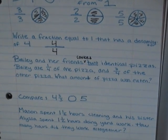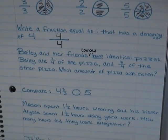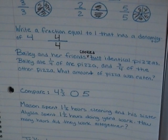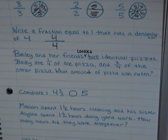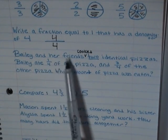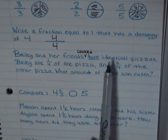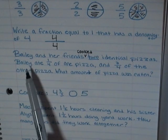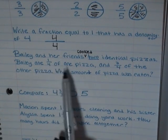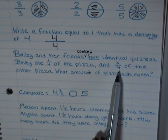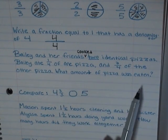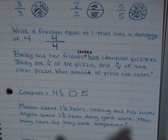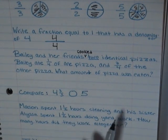Alright. Now on to our next example. Again, you can pause it and write down the problem and try it yourself, or you can do it and follow along with me. Bailey and her friends cooked two identical pizzas. Bailey ate one fourth of one pizza and three fourths of the other pizza. What amount of pizza was eaten? Now, there are a few ways to do this. The first way that we're going to do it is draw some circles.